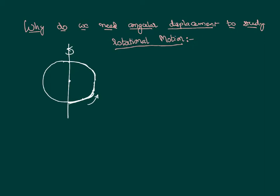Let us consider a point P moving in a given specified time t from P to Q, because it is in rotational motion. What is the displacement of that point? We can draw a straight line as the shortest distance between points P and Q. But if we consider another point along the same body...